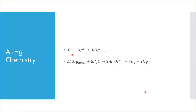The basic chemistry here is that aluminum metal and mercury metal will dissolve into each other and form an amalgam. The amalgam can then react with just a little bit of water to form an aluminum hydroxide species, liberating some hydrogen and reforming elemental mercury. So the mercury is now available to attack more aluminum.